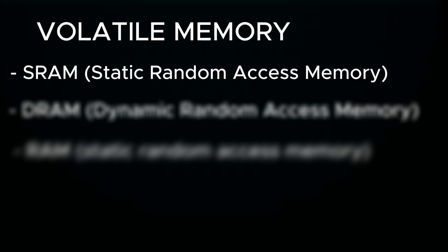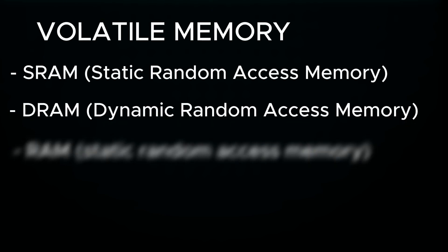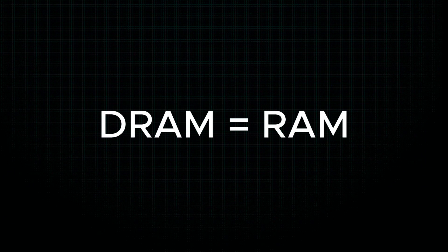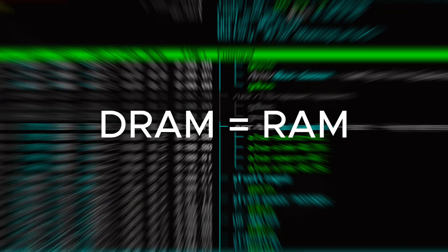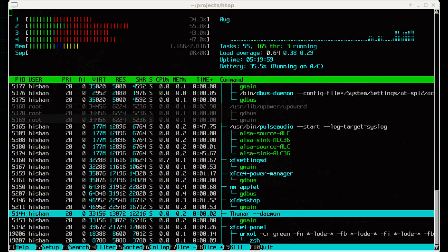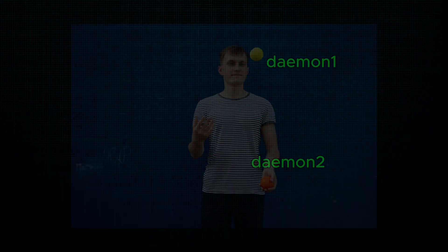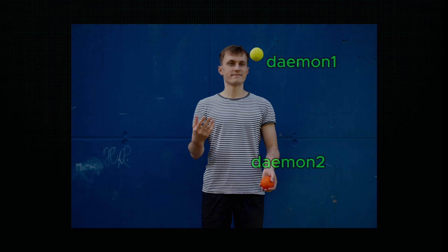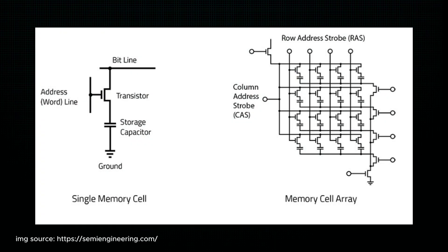Next up is DRAM — Dynamic Random Access Memory. This is the main memory of the computer, often called just RAM. RAM is where the operating system, currently running applications, and the data they are using are stored for quick access by the CPU. It stores data using a capacitor and transistor for each bit. This design is much simpler and cheaper than SRAM, allowing for much larger memory capacities.